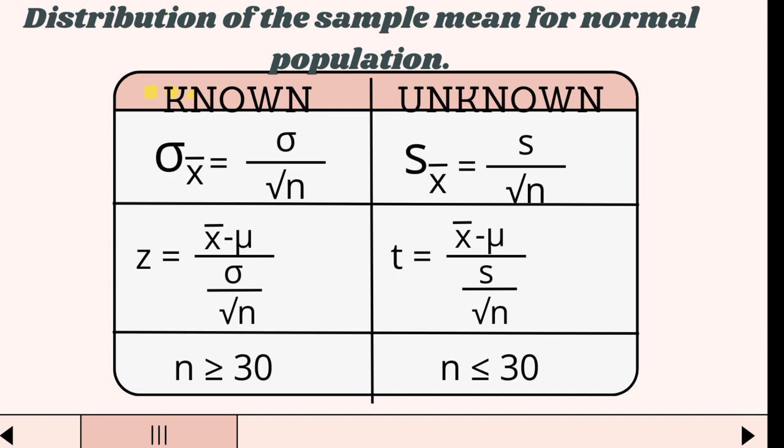In the second row, we have the Z distribution when the population variance is known, and the T distribution formula when the population variance is unknown.